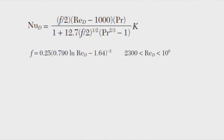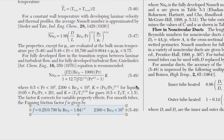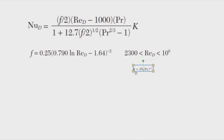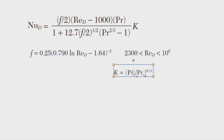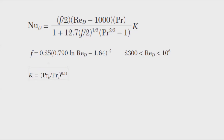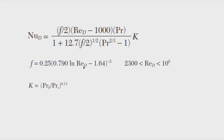Now let's solve for K. Before we can do that, we need to find the fluid properties at both the bulk and surface temperatures — specifically, the Prandtl number at the bulk temperature and at the surface temperature. The Prandtl number is PR = Cp·μ/k.